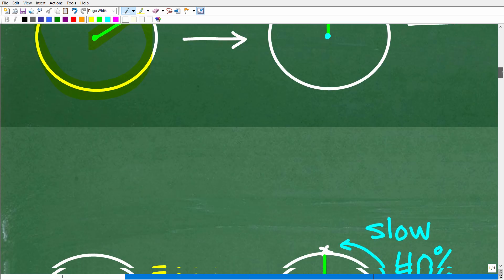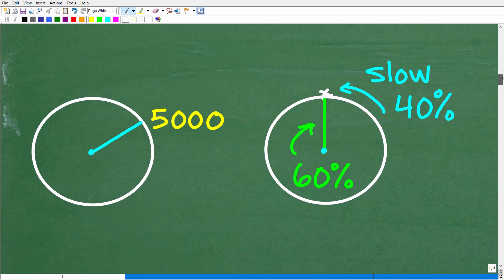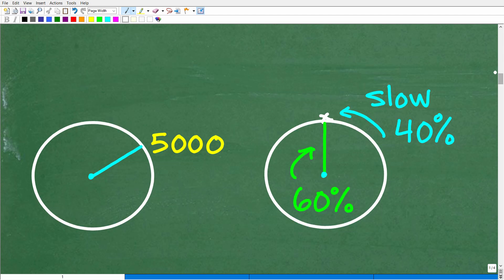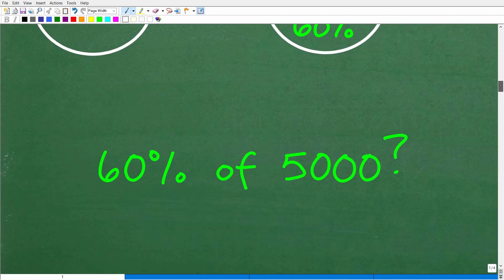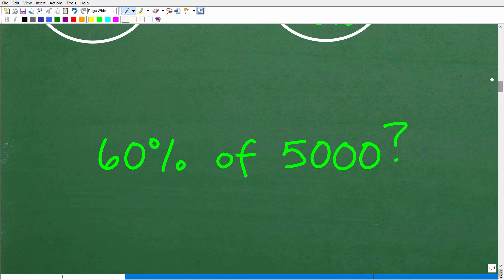Now there's a couple different ways we can answer this question. So the long way is to figure out what 40% of 5,000 is and then subtract that from 5,000. But a much easier way is to simply figure out what 60% of 5,000 is. That's equivalent to decreasing 5,000 by 40%. All right, so that means we simply need to figure out what 60% of 5,000 is equal to.